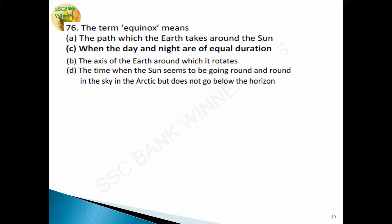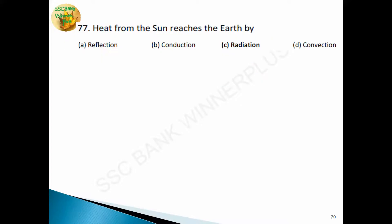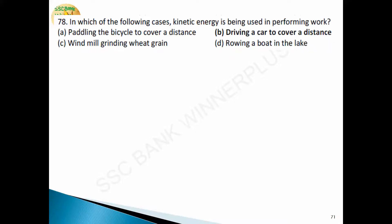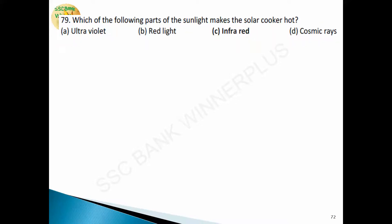Question 74: the term equinox means when day and night are of equal duration — that is known as equinox. Question 75: heat from the sun reaches the earth by radiation. Question 76: in which of the following cases is kinetic energy being used in performing work? Driving a car to cover a distance — that is the answer.